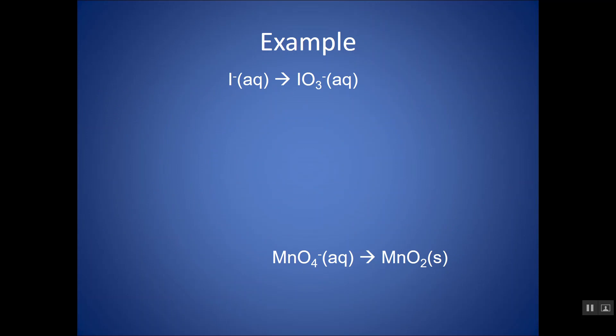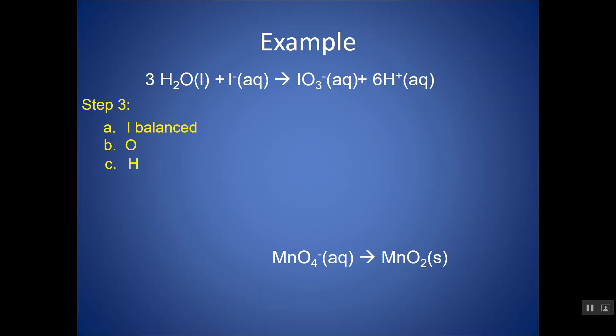For the top (iodine) half reaction: balance everything other than O and H — iodine is already balanced. Balance oxygen using water — there are three oxygens on the right, so add three H2O on the left. Balance hydrogen — three waters introduce six hydrogens on the left, so add six H⁺ on the right. Balance charge: left has 1− total, right has 1− and 6+, giving 5+ on the right, so add six electrons on the right.